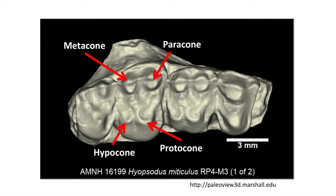The protocone is often the largest cusp on the lingual, or tongue side, of the tooth, and is often paired with a hypocone, which is found on the posterior edge of the tooth. You can see in this species the third molar actually lacks a hypocone, and it features only a shelf on the back of the tooth called a cingulum.